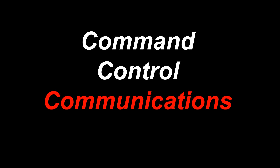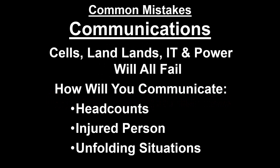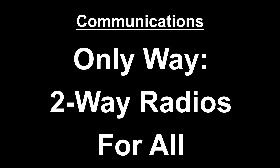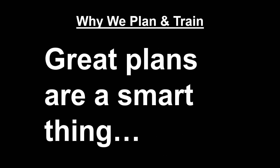Regarding communications: cells, landlines, and PA systems will all fail during an emergency. Power classically goes out — the second thing that happens in all emergencies. Cell phones are point-to-point, and police and fire can shut off cell service within minutes of an emergency if they suspect terrorism. The answer is two-way radios — walkie-talkies. These are undefeatable when used by your emergency team on your premises and are the only way to successfully manage headcounts, injured personnel, and unfolding situations.